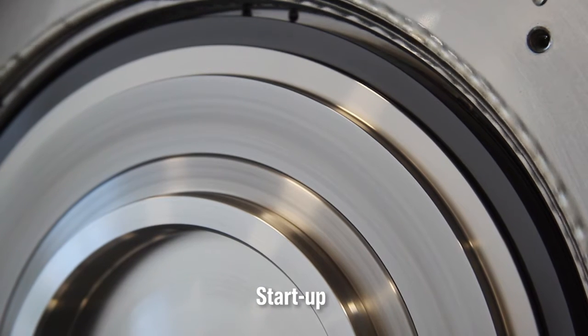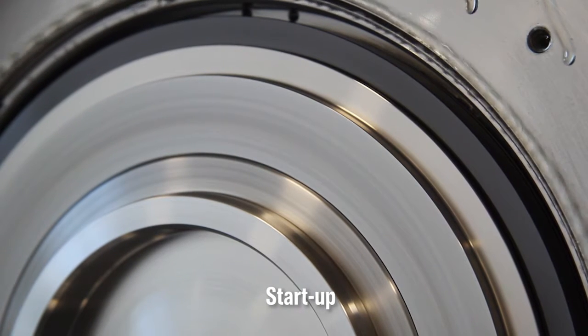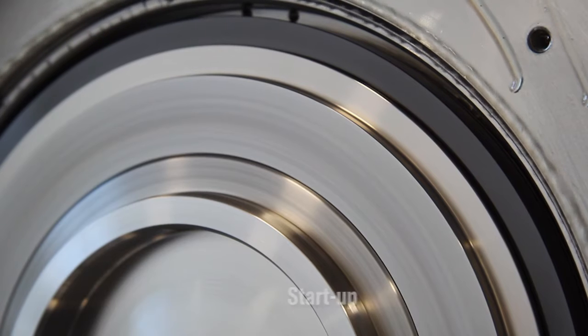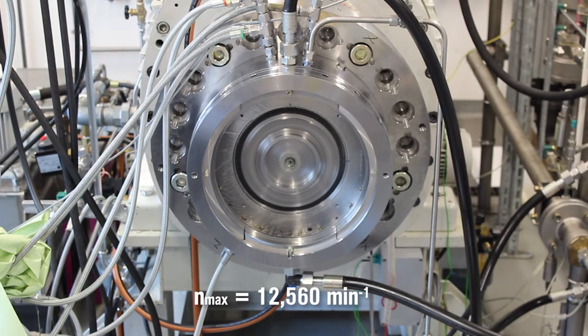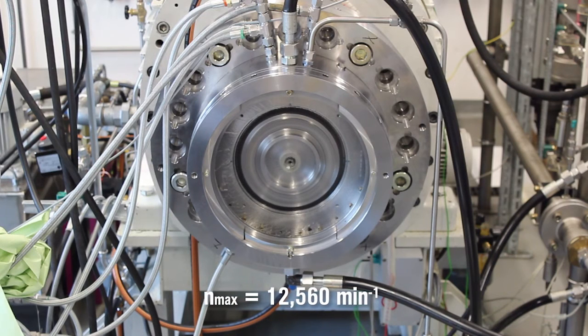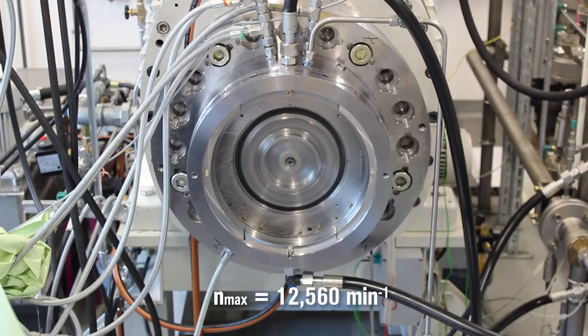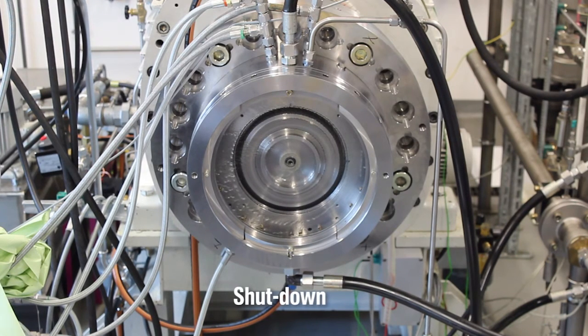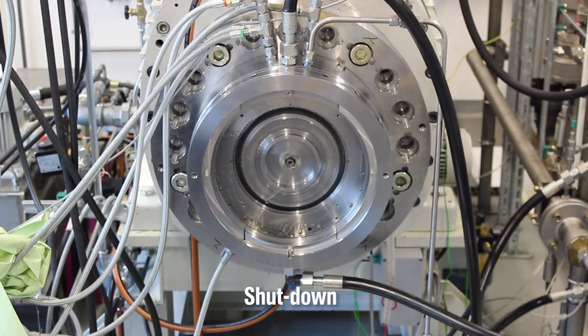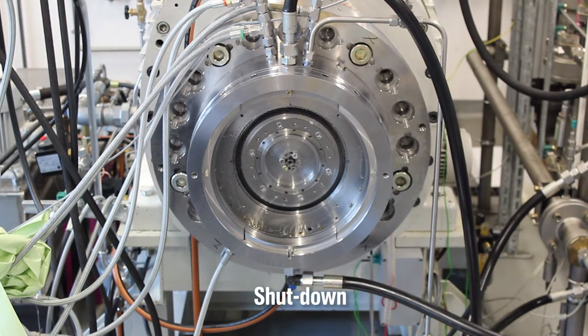Shortly after startup, it can be clearly seen how oil present at the seal is returned to the bearing housing via the outer diameter of the seal. The speed is increased to 12,560 revolutions per minute. After a few minutes, the test rig is shut down until stationary. This marks the end of the test sequence.